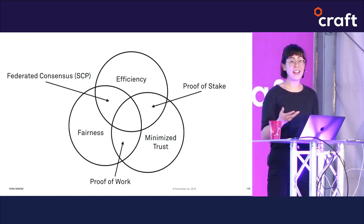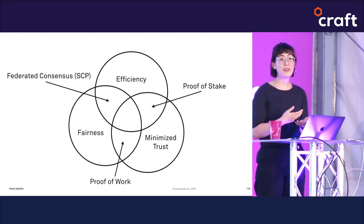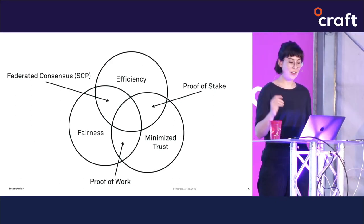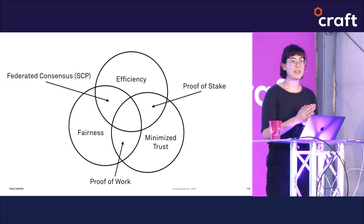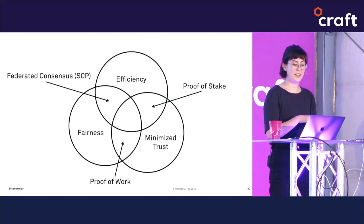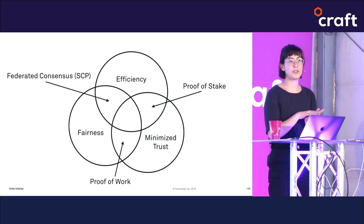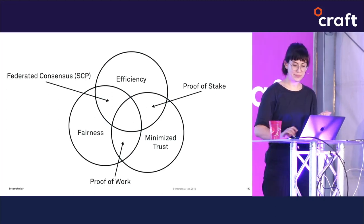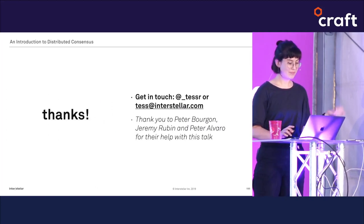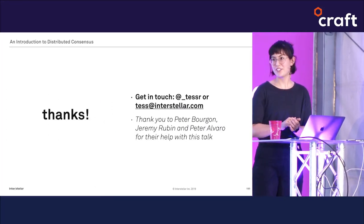Proof of work minimizes trust and prioritizes fairness but at the cost of efficiency. Proof of stake prioritizes efficiency and minimizes trust but it's not fair to those with fewer resources. Finally, federated consensus like SCP prioritizes fairness and efficiency but requires nodes to choose other nodes to trust. These worlds are intertwined and all the algorithms are designed to solve the same problems, just in different ways and making different trade-offs for different applications. I hope I've given you a healthy appreciation of all these trade-offs.